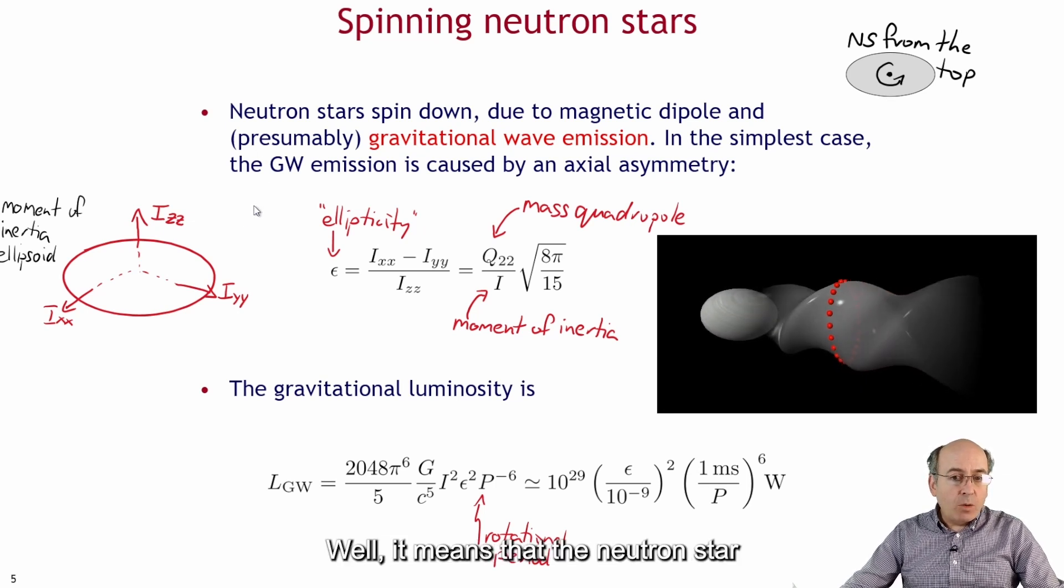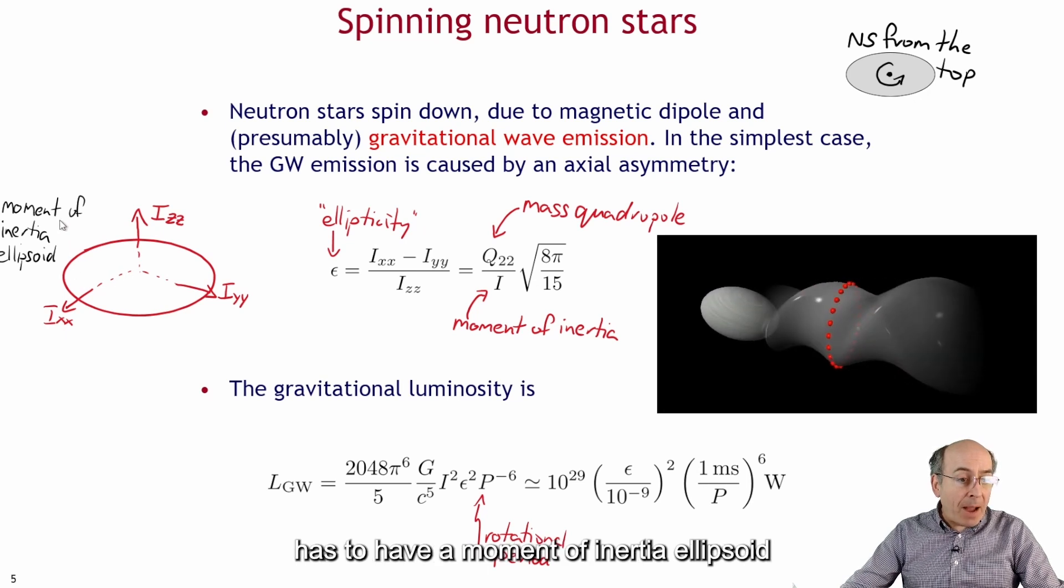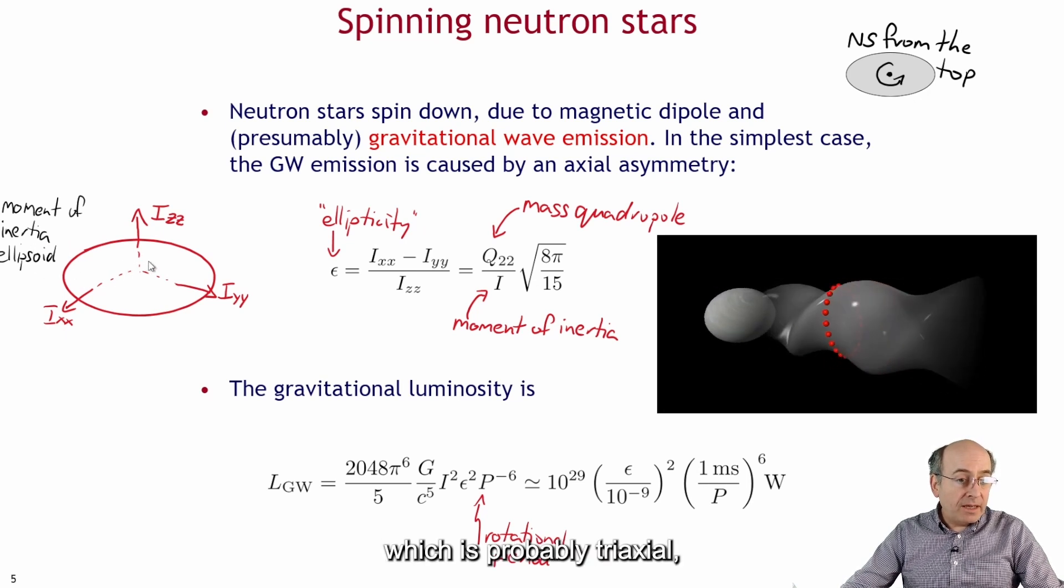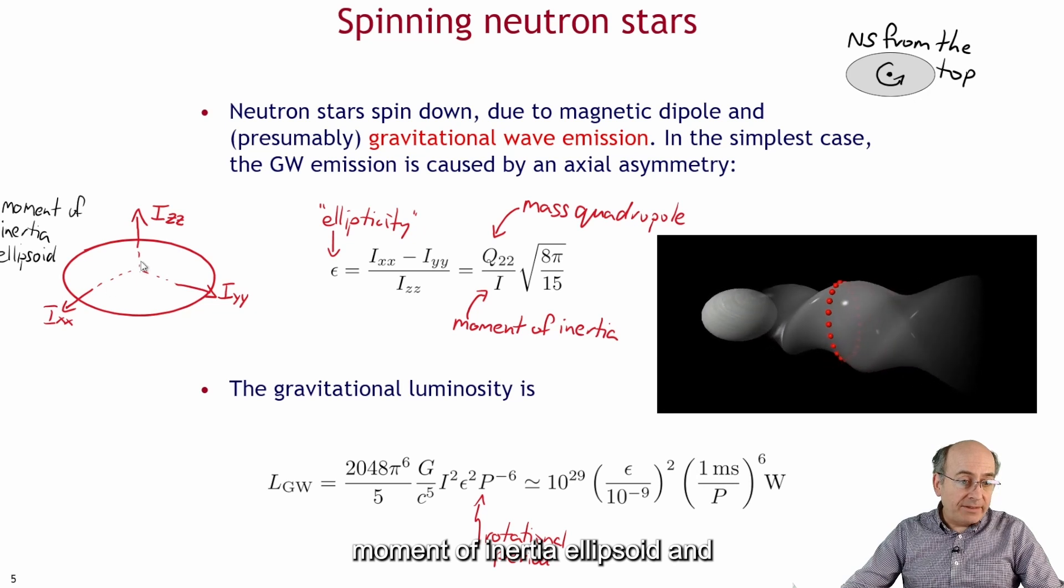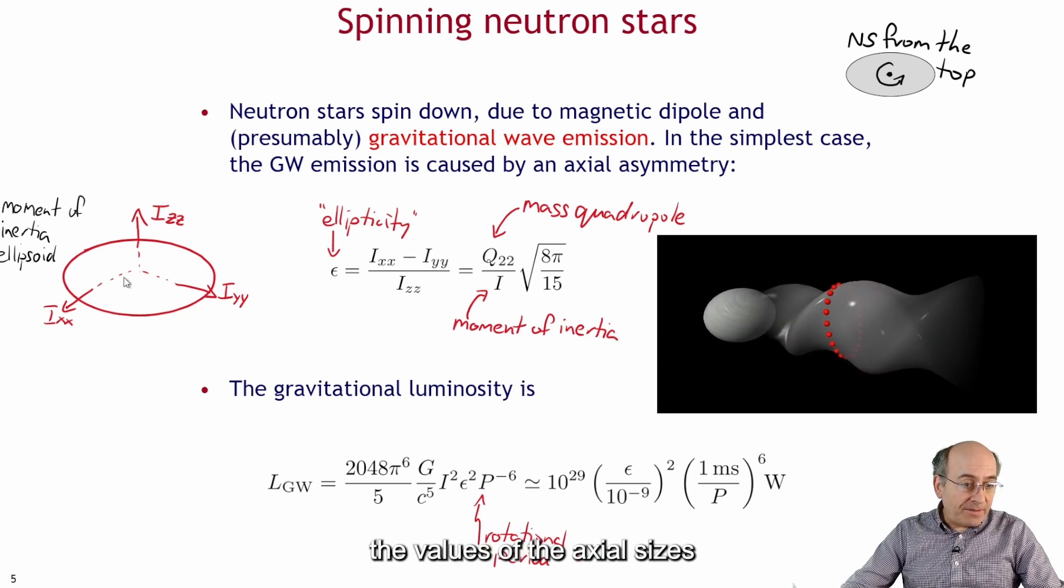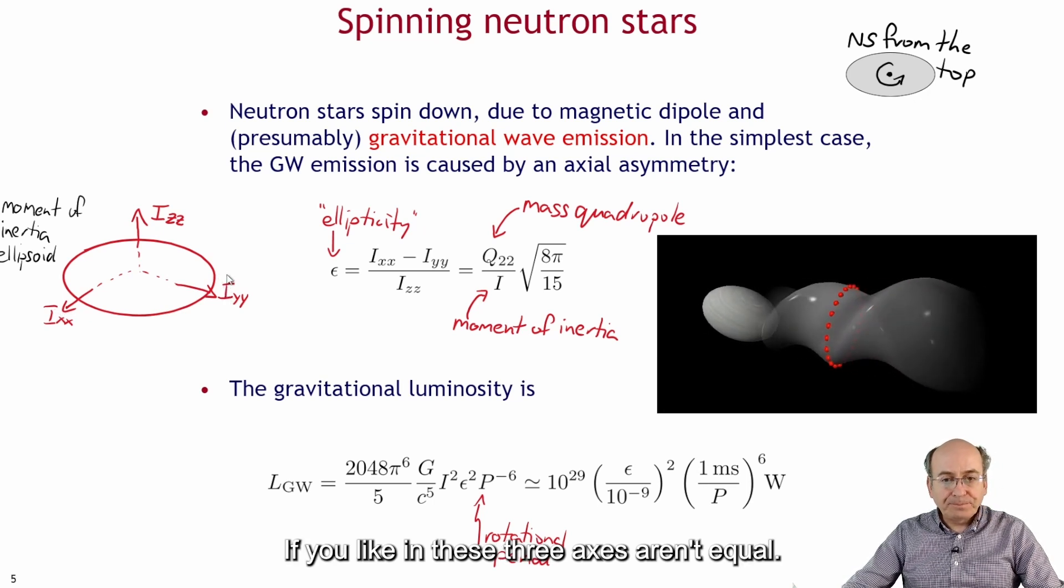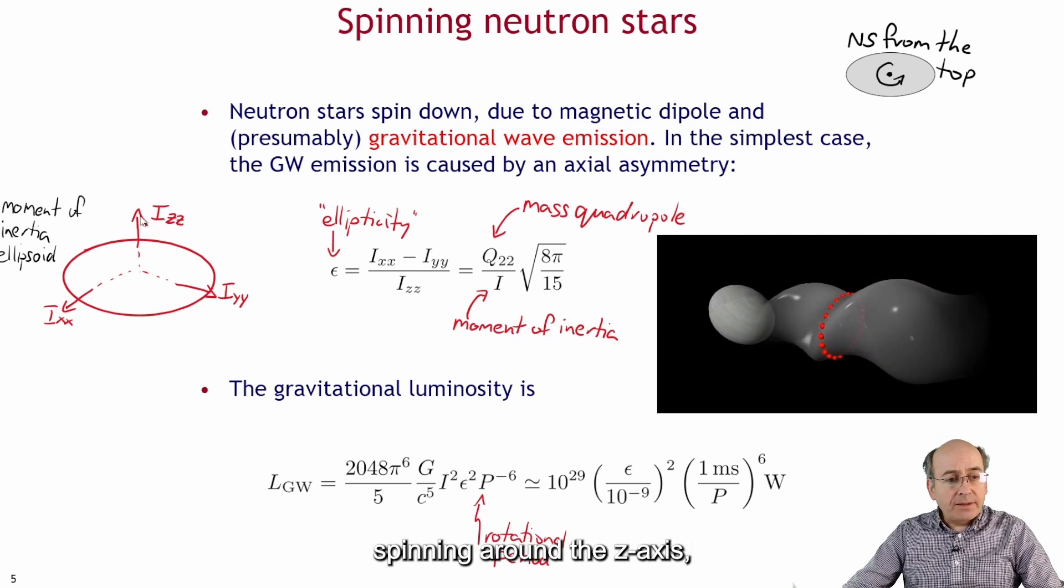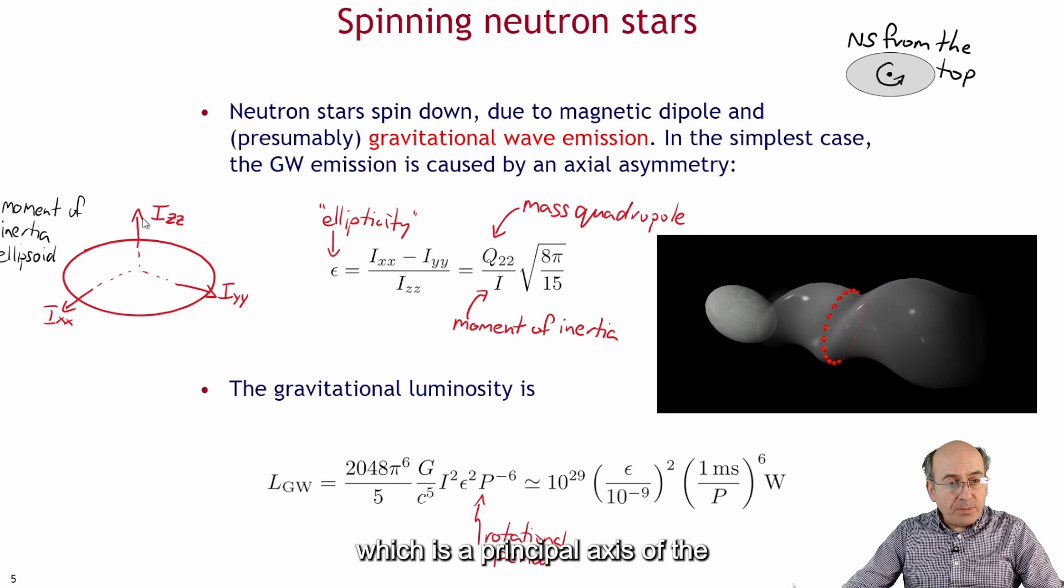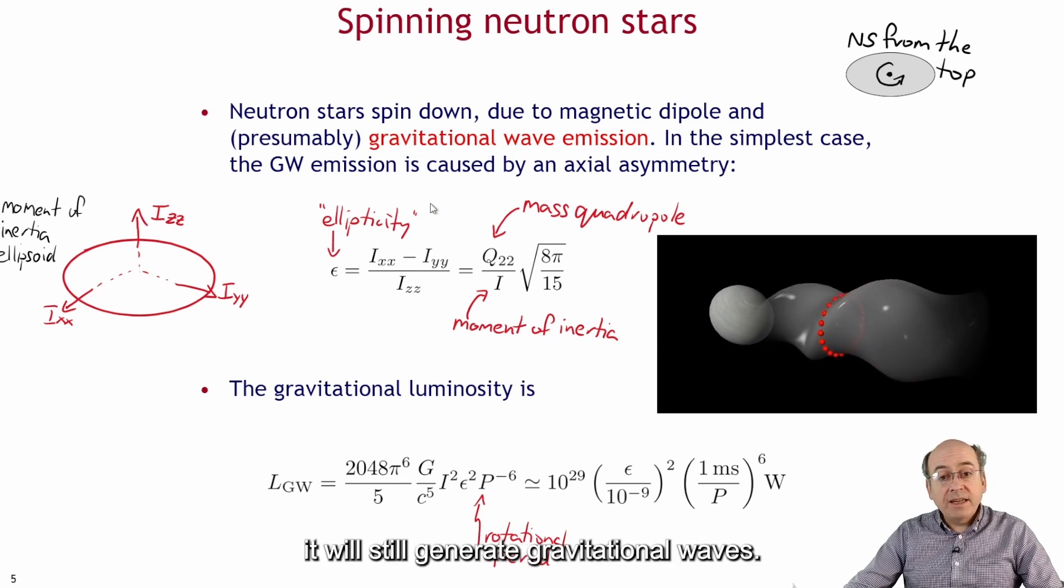So what does this mean? Well it means that the neutron star has to have a moment of inertia ellipsoid which is probably triaxial. So three axes in the moment of inertia ellipsoid and the values of the axial sizes in these three axes aren't equal. If you have that even though it's spinning around the z-axis which is a principal axis of the moment of inertia ellipsoid it will still generate gravitational waves.